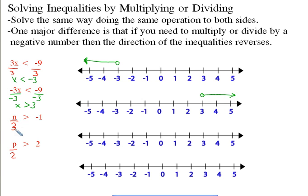Now for n divided by 3 is greater than negative 1, all we're going to do is multiply both sides by 3. Then we're left with n is greater than negative 3. So we do negative 3, put a little circle there. It's greater than negative 3, so go ahead and draw a line there.